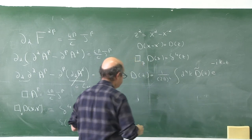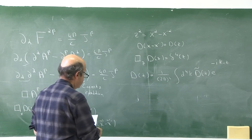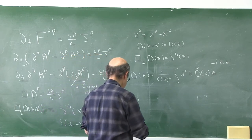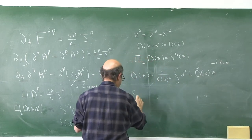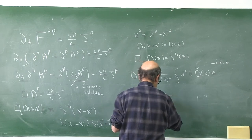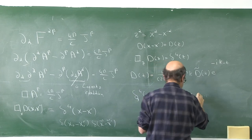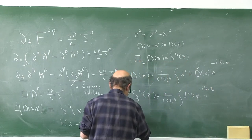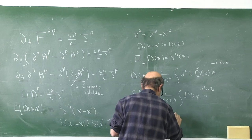We take the Fourier representation of D(z) and plug it into the wave equation with the delta source. Before doing so, we define the four-dimensional delta function in terms of its Fourier transform: δ⁴(z) = (1/(2π)⁴) ∫ d⁴k e^{−ik·z}, with k·z = k⁰z⁰ − k·z.